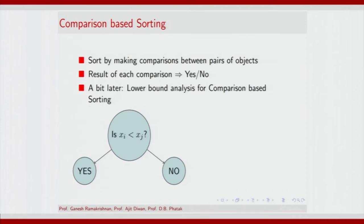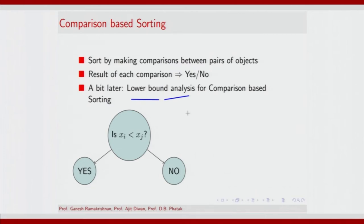The basic idea of comparison-based sorting is to take pairs of objects and perform operations based on the outcome of comparing those two elements in the pair. The result of each comparison is basically a yes or a no. It turns out that for algorithms based on comparison there is a lower bound — no algorithm can perform better than n log n, where n is the length of the array being sorted.